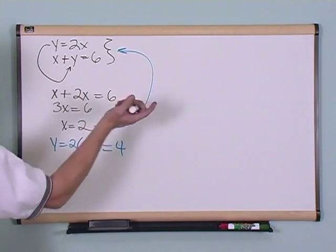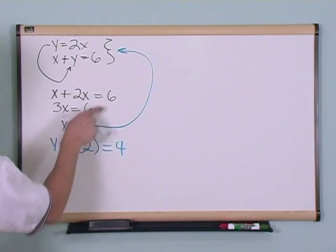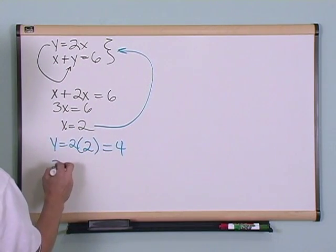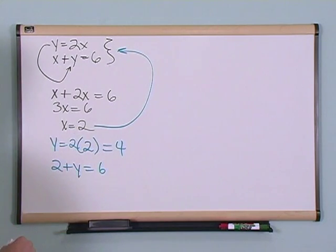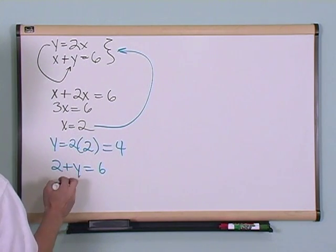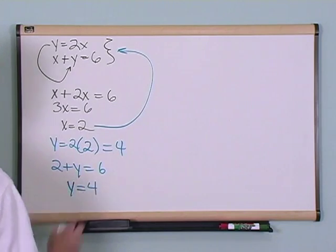Let's say I put it into this bottom equation instead. Let's just say 2 goes into here. So I've got 2 plus y equals 6, if I happen to choose a second equation. Now I solve for y, and you'll see right away that y is equal to 4.